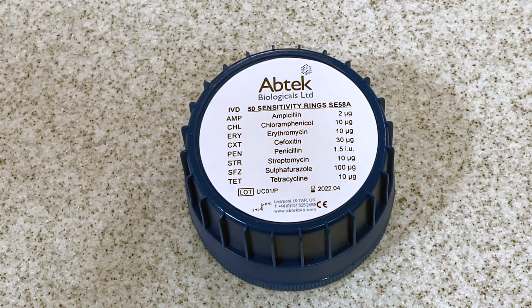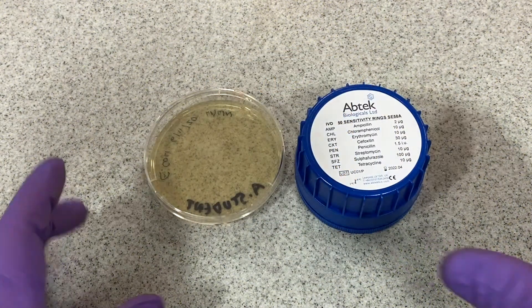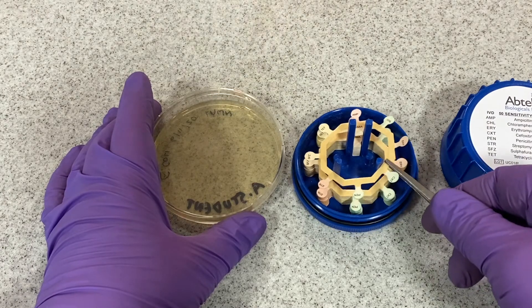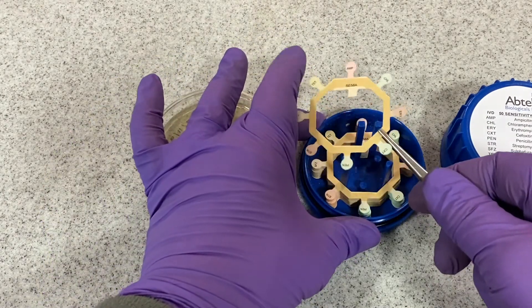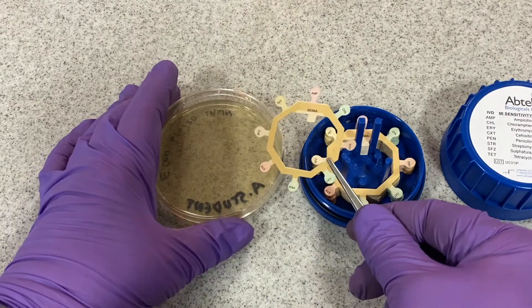A ring of antibiotic discs is used in conjunction with the lawn plate to assess the effectiveness of each antibiotic. This is calculated by measuring the zone of inhibition of growth of the bacteria around each antibiotic sample.